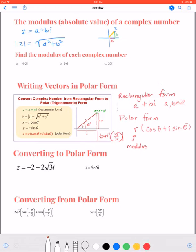A way we can abbreviate that if we want is just to say r, cis, theta. That stands for this whole thing in here.